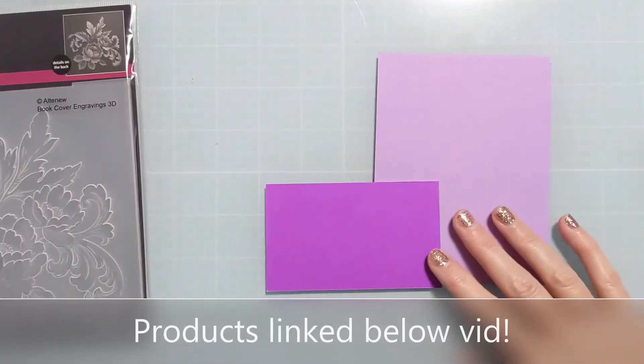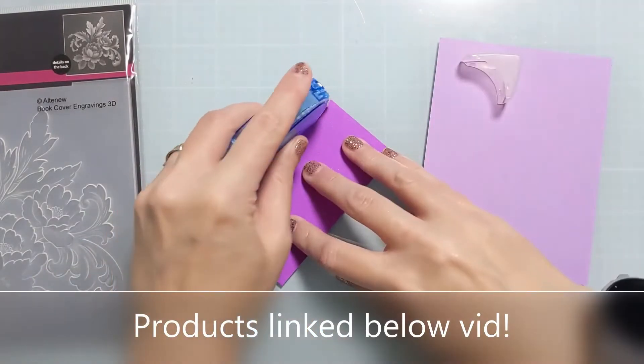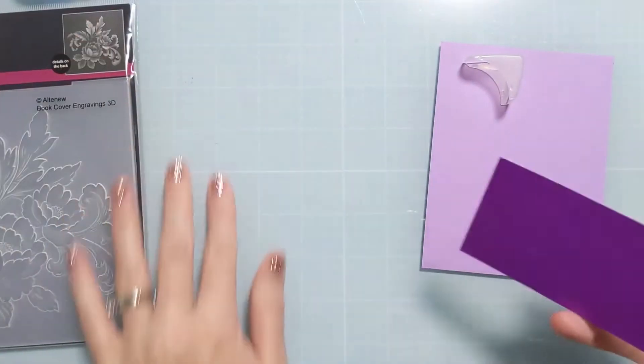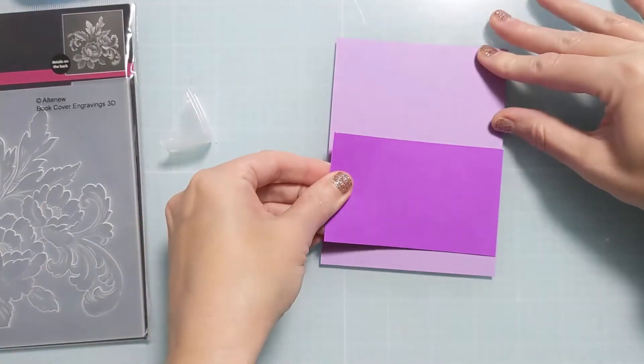So basically I decided to cut down this panel, the light purple panel, to four inches by five and a quarter and then I cut this fuchsia strip down.